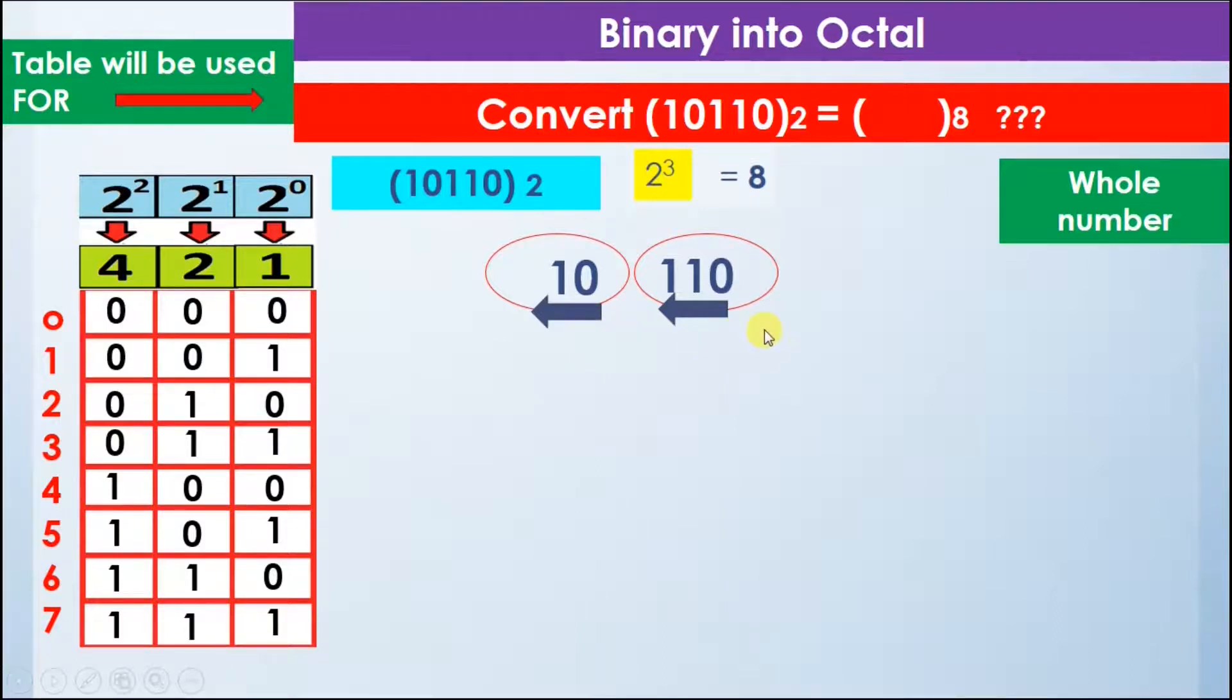We will make groups of 3 bits. In this group we have 3 digits: 110. In this group we have 2 digits, but we want 3 digits, so we will add a 0 to make them 3.